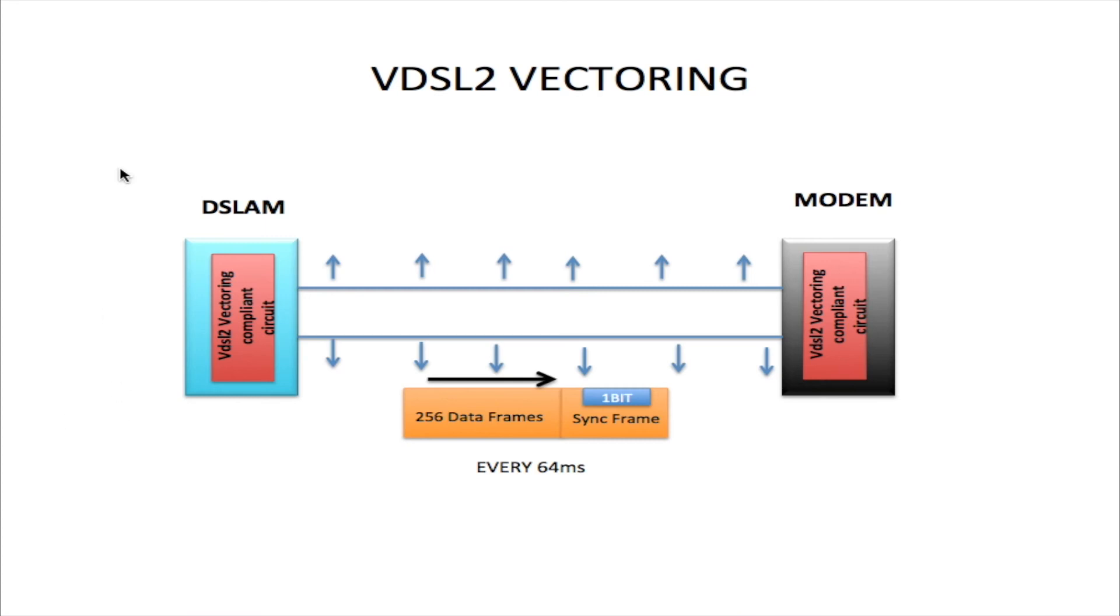Here I'm going to use one DSL line connecting from the DSLAM to the modem to show you how VDSL2 vectoring works. On this particular DSL line, what I'm showing you here is before the VDSL2 vectoring is applied, you will see the crosstalk information from the line. The process in order to get VDSL2 vectoring working on the line, this is how it works.